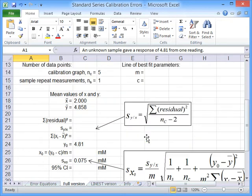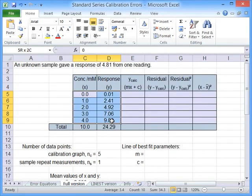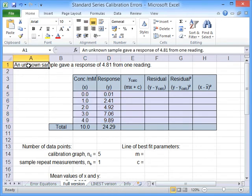To show you how this gets implemented, I've got some XY data here, some calibration data and we've also got this statement that the unknown sample gave a response of 4.18 from one reading.